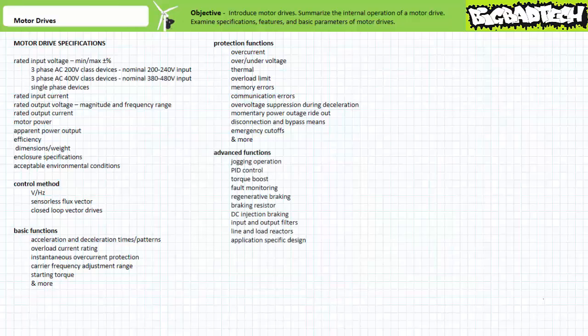Motor drives may also include handy bonus features or options, like jogging operation, PID control, torque boost functions, fault monitoring, whether or not the drive includes a regenerative braking unit or braking resistor, whether or not the drive is capable of DC injection braking, and whether or not the drive includes accessory input and output filters to reduce noise, or line and load reactors to suppress harmonics. Motor drives may also support optimized design features for specific applications, including constant torque applications, variable torque applications, shock or impact loads, constant speed applications, or super high-speed applications.